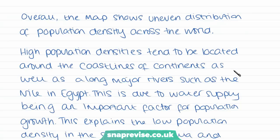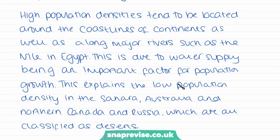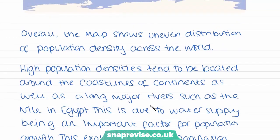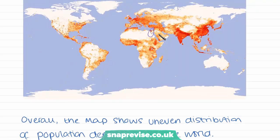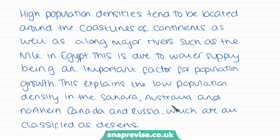Next, talk about the location of very high population densities. High population densities tend to be located around the coastlines of continents as well as along major rivers such as the Nile in Egypt. This is due to water supply being an important factor for population growth, which also explains the low population density in the Sahara, Australia, northern Canada, and Russia — all classified as deserts. Here I've picked out a pattern from the map and commented on why this is the case, linking back to what we learned about water supply.